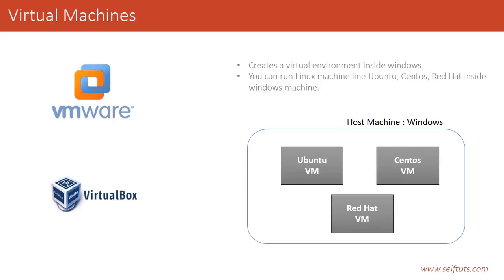Two most important companies support virtual machines — making virtual machines is just magic using these two softwares. One is VMware and another is VirtualBox, which is provided by Oracle. These two softwares — VMware and VirtualBox — create a virtual environment inside Windows. Linux machines come in many different flavors like Ubuntu, CentOS, Red Hat, SUSE Linux, and many more. We are focusing on the most famous ones: Ubuntu, CentOS, and Red Hat.